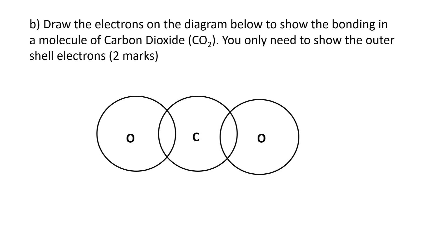Question B says draw the electrons on the diagram below to show the bonding in the molecule of carbon dioxide. You only need to show the outer shell electrons. Carbon is in group four so that tells us carbon is going to have four electrons on its outer shell. Oxygen is in group six of the periodic table so each oxygen atom is going to have six electrons on the outer shell — the same again for the right hand atom.